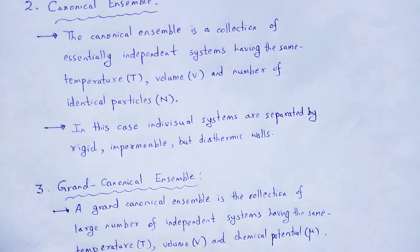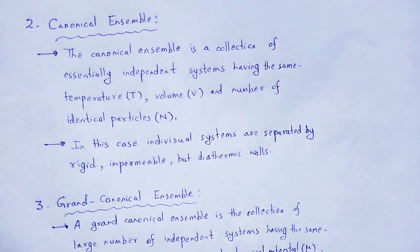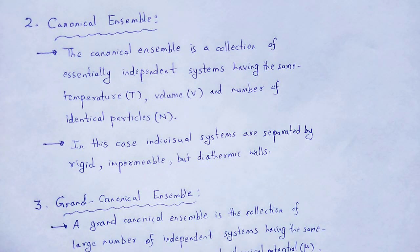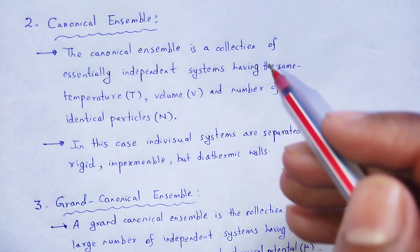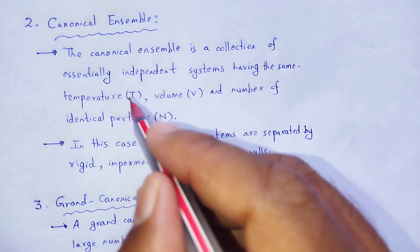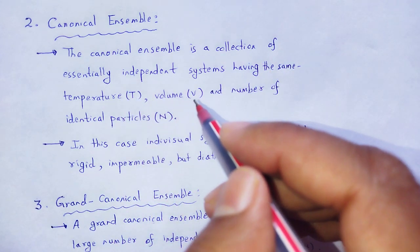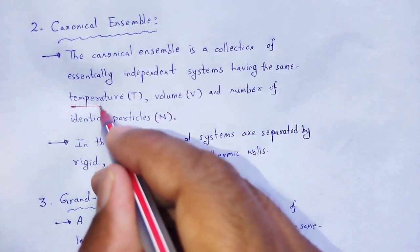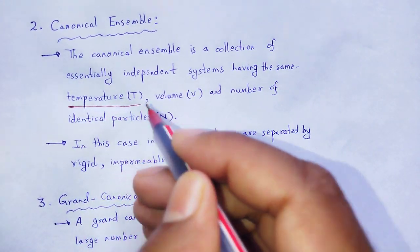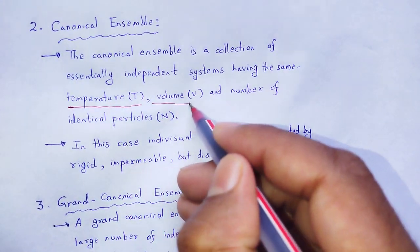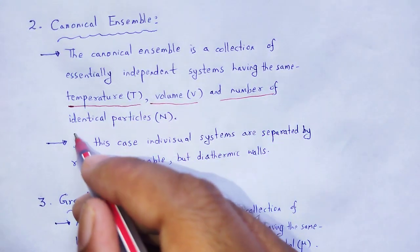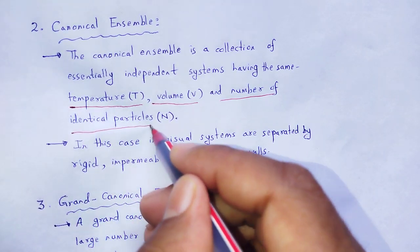Next type: canonical ensemble. The canonical ensemble is the collection of essentially independent systems, having the same temperature, volume, and number of identical particles.